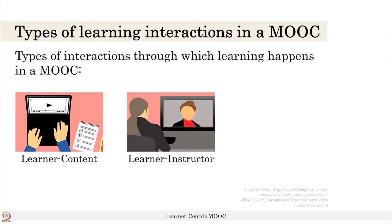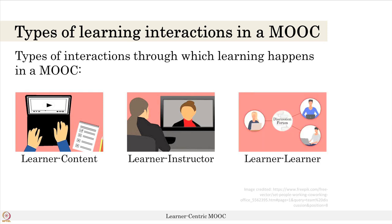The second type of interaction is the learner-instructor interaction, where the learner is interacting with the instructor either in the discussion forum or through interactive sessions like you have experienced in this course. And what is the third type of interaction through which learning can happen in a MOOC? It is the learner-learner interaction, or peer interaction, in a MOOC.